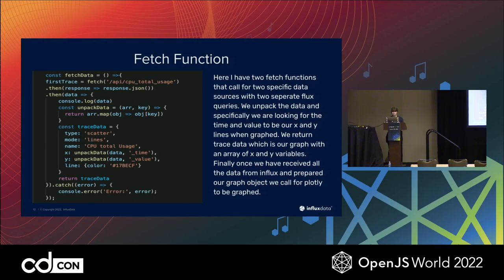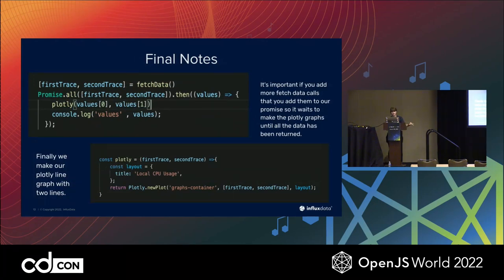Finally, I'm just going to be using a fetch function. This is where we actually start to have Plotly.js built in. Plotly.js is just one open source graphing library — we also have blogs coming out for Chart.js and D3, and we're pretty compatible with most things. Here I have two fetch functions that call two specific data sources with two separate Flux queries. We unpack the data and put the time and value as the X and Y axes when graphed in Plotly. We return that trace data back once we've received everything. We have that fetch data function inside of a promise — that's just to make sure this runs appropriately. As any JavaScript engineer will tell you, if you don't put in promises, you end up with very nasty results.